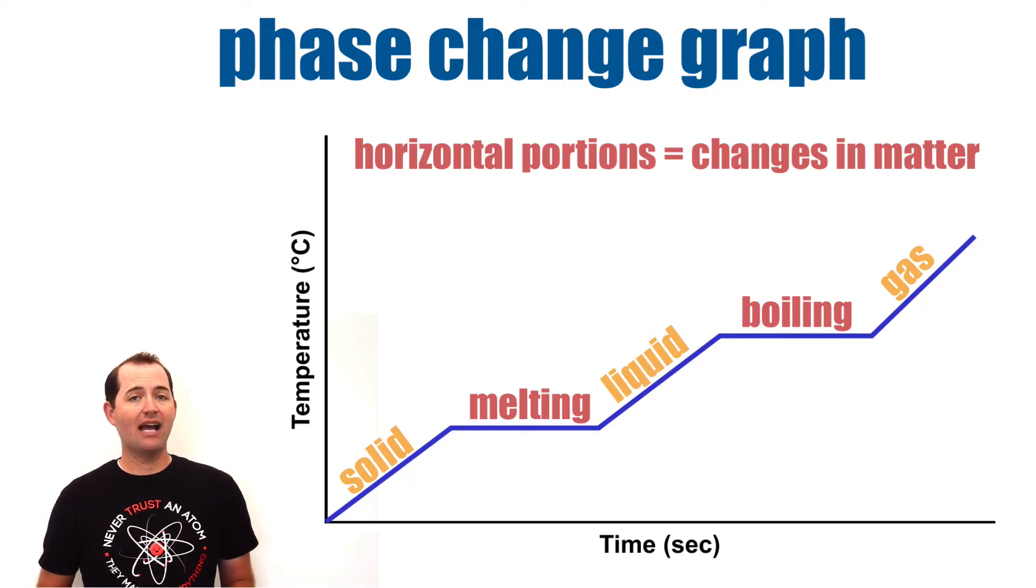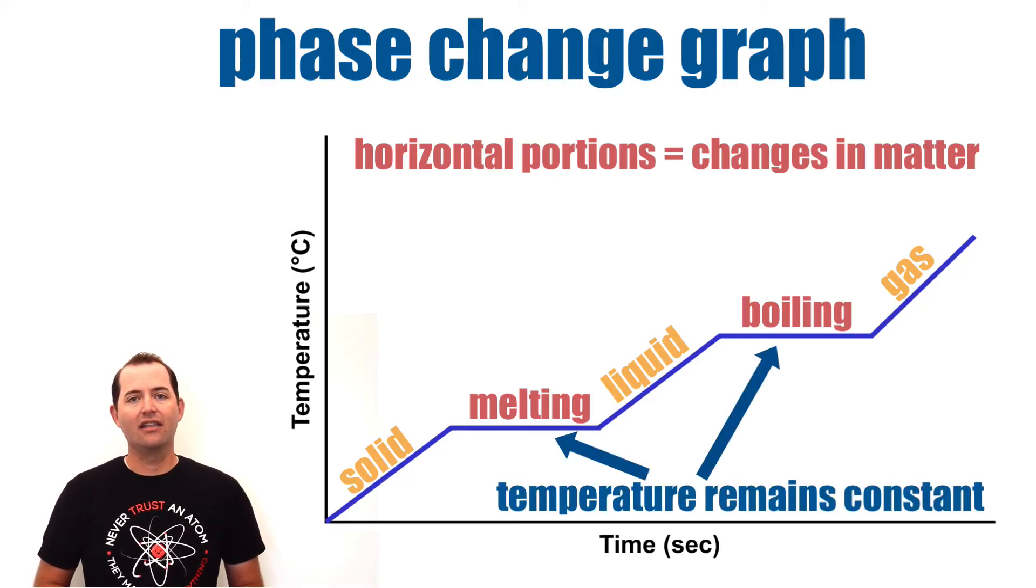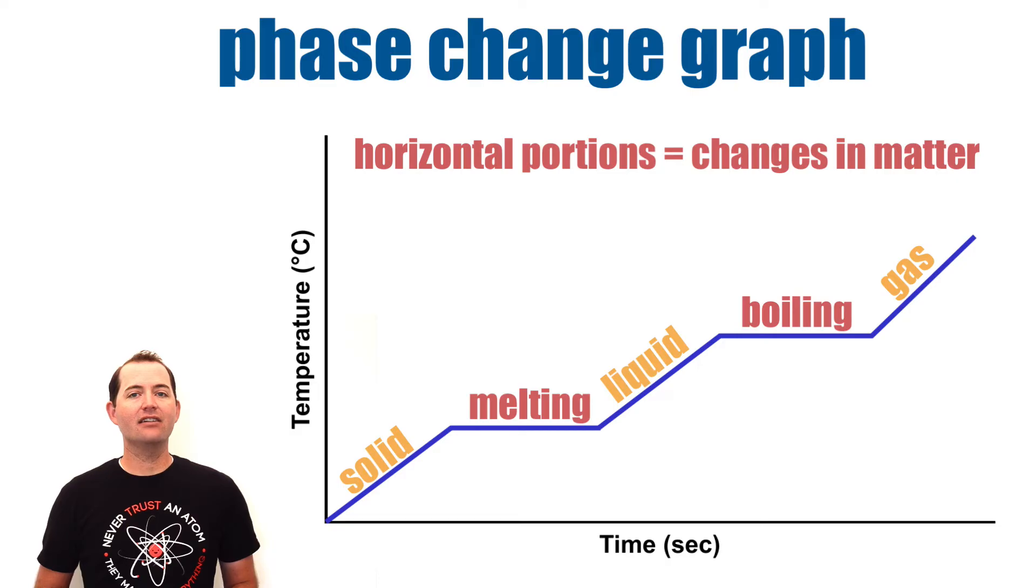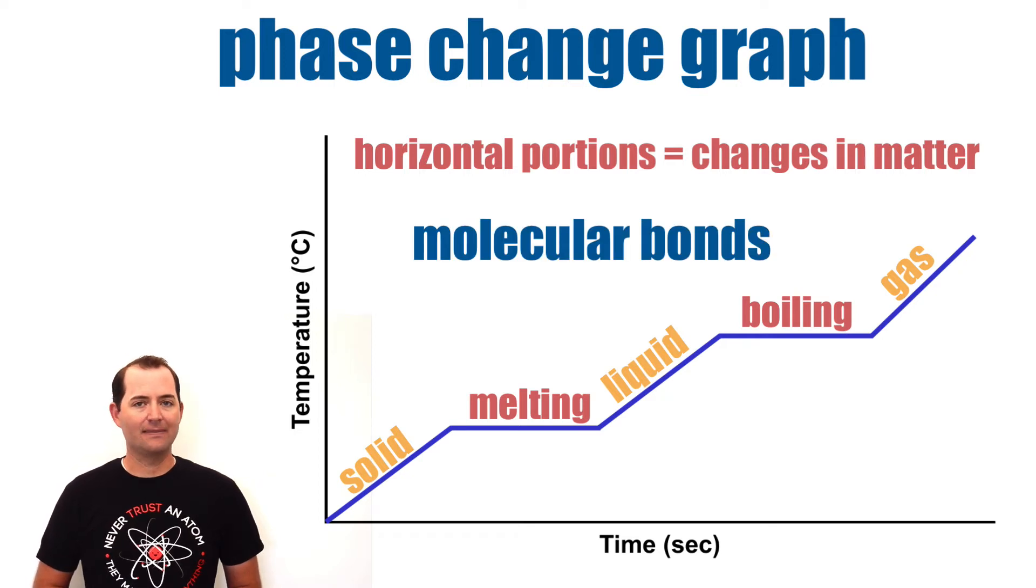While the state of matter is in transition, the temperature remains constant, even though heat or energy is still being added to the substance. Instead of increasing the kinetic energy or temperature of the substance, the added energy is affecting the molecular bonds of the substance.